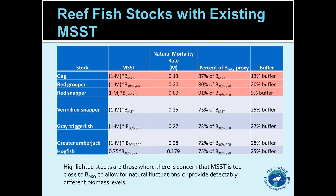This amendment is only going to address seven of the stocks in the reef fish FMP. There are 31 stocks in that FMP, but only seven of them currently have MSST definitions and other status determination criteria. The seven stocks are: gag, red grouper, red snapper, vermilion snapper, gray triggerfish, greater amberjack, and hogfish. Three of those are currently classified as overfished: red snapper, gray triggerfish, and greater amberjack.